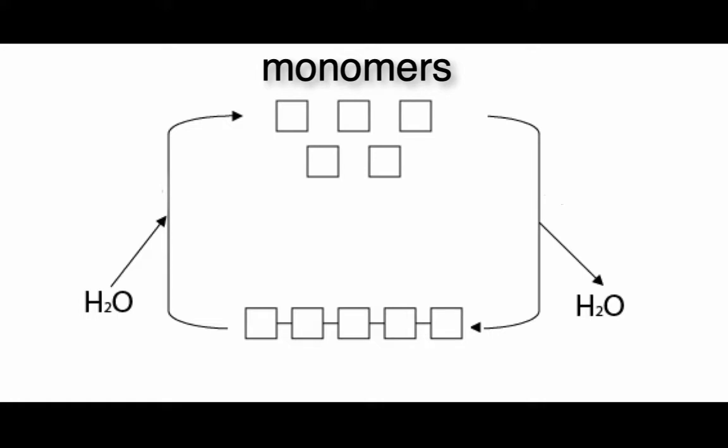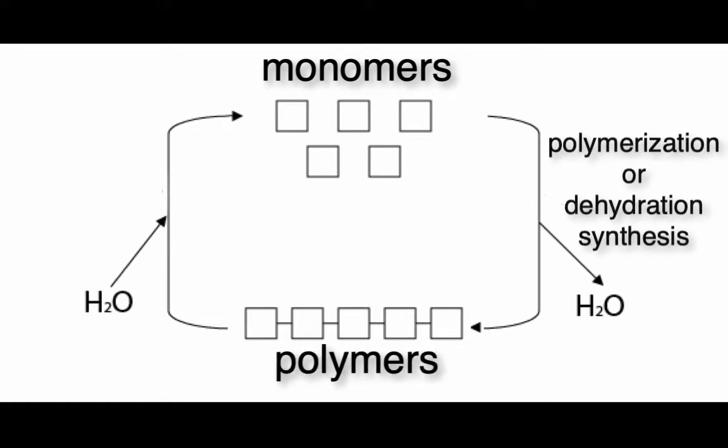These monomers are enzymatically joined together to form polymers. The process of joining monomers is called polymerization or dehydration synthesis. This is the right side of the illustration.